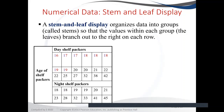Let's say with our day packers data: for the age of 16, the stem will be 1 and the leaf will be 6. For 17, the stem is 1 and the leaf is 7. For 18, the stem is 1 and the leaf is 8. For 20, the stem is 2 and the leaf is 0.